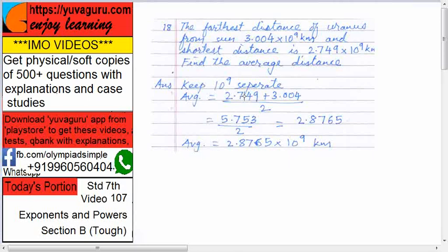Average equals to what? What do you mean by average? Average means total of these two numbers divided by 2. If you have to find the average of 3 numbers, add the numbers and divide by 3. If you have to find the average of 5 numbers, add 5 numbers and divide it by 5. So, here we have two numbers.